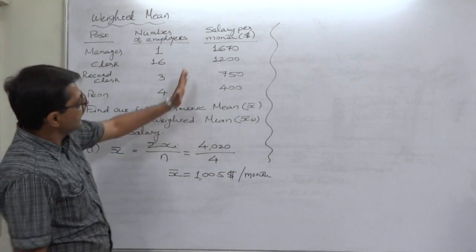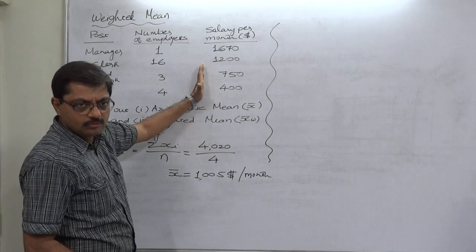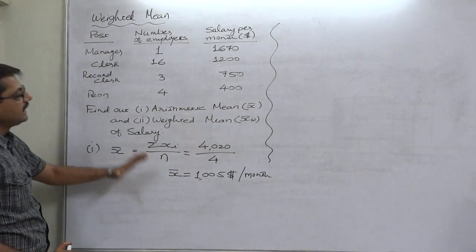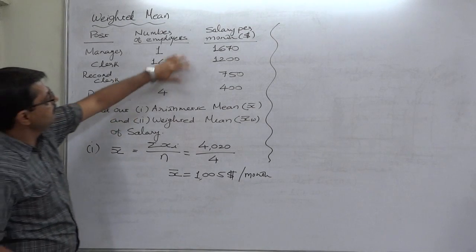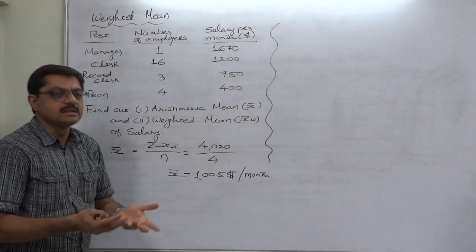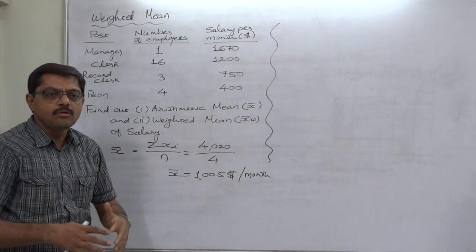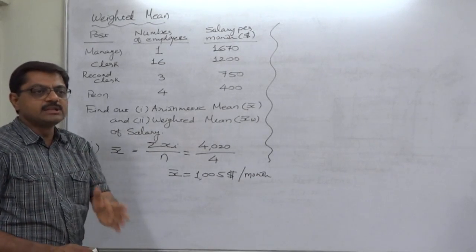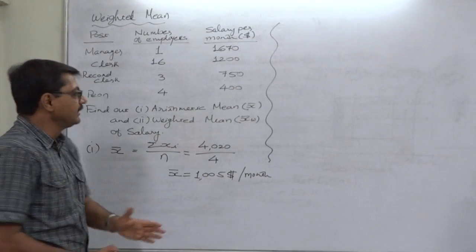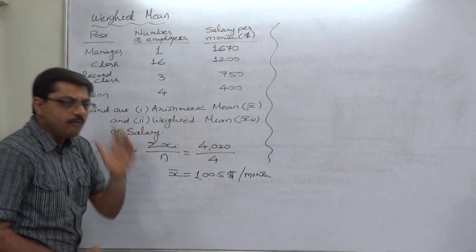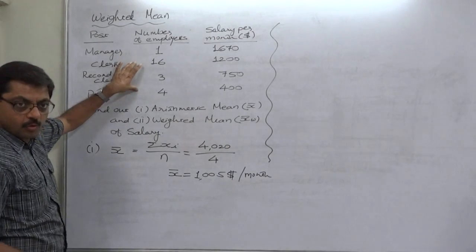We just take per head salary into consideration. While in calculating the weighted mean, we will consider the number of employees, so ultimately we will consider the entire amount paid as salary per month. On the basis of that we will find the weighted mean. That weighted mean will be the average salary paid per month per person, whatever the post of the person is.